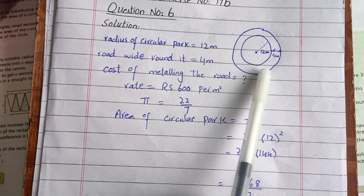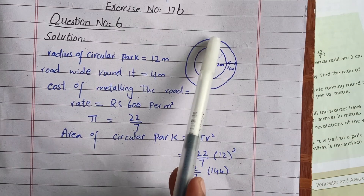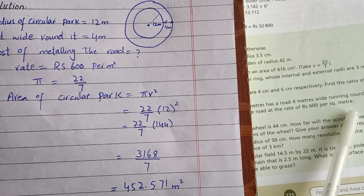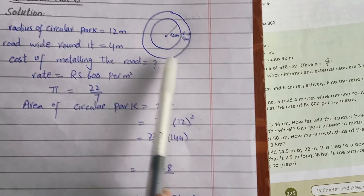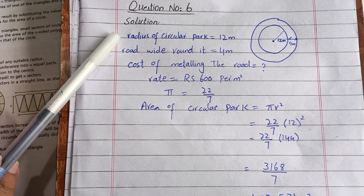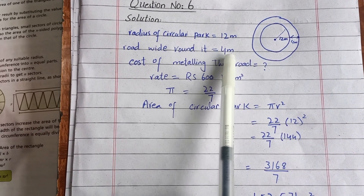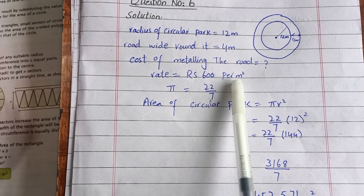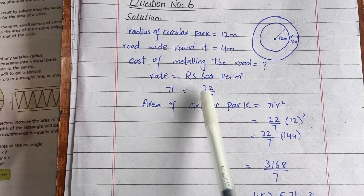What we have to do is find the cost of the road. The rate is given as 600 rupees per square meter. We have to find the total cost of paving this path. The radius of the circular park is 12 meters, the road is 4 meters wide around it, and the value of pi is 22/7.